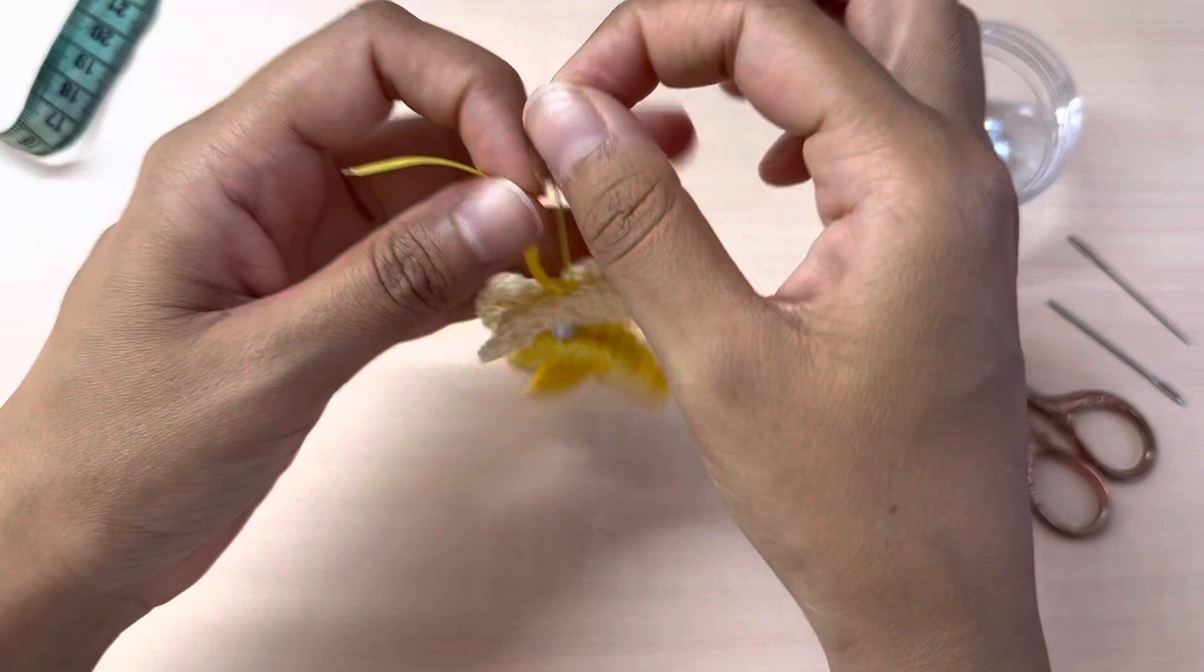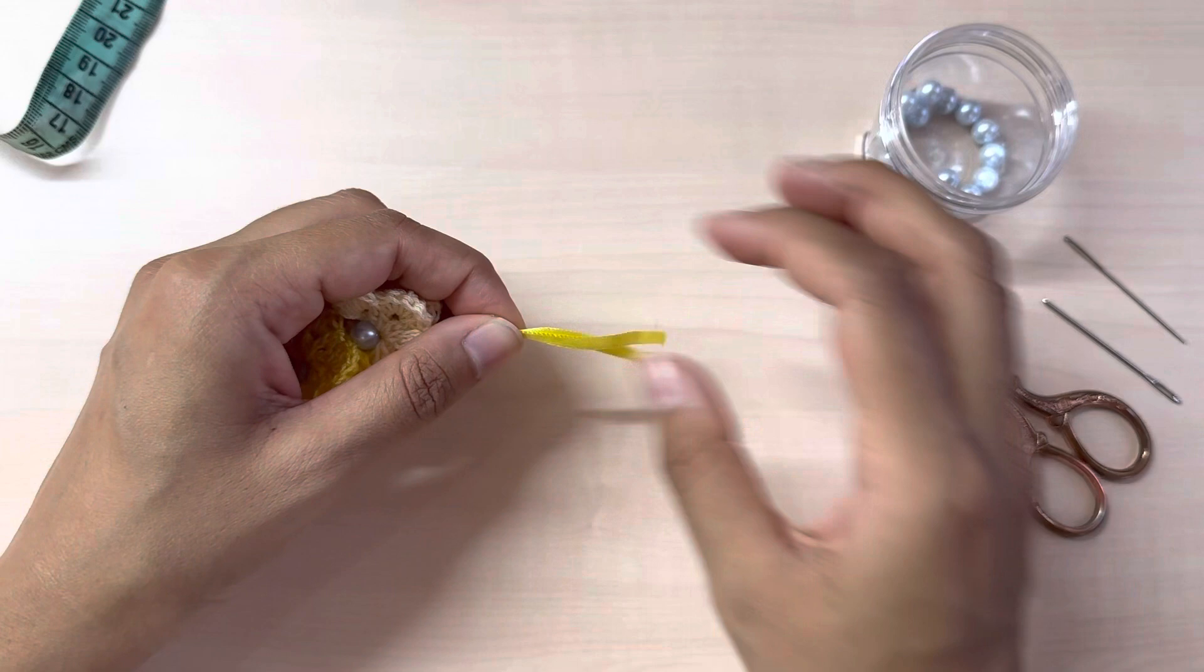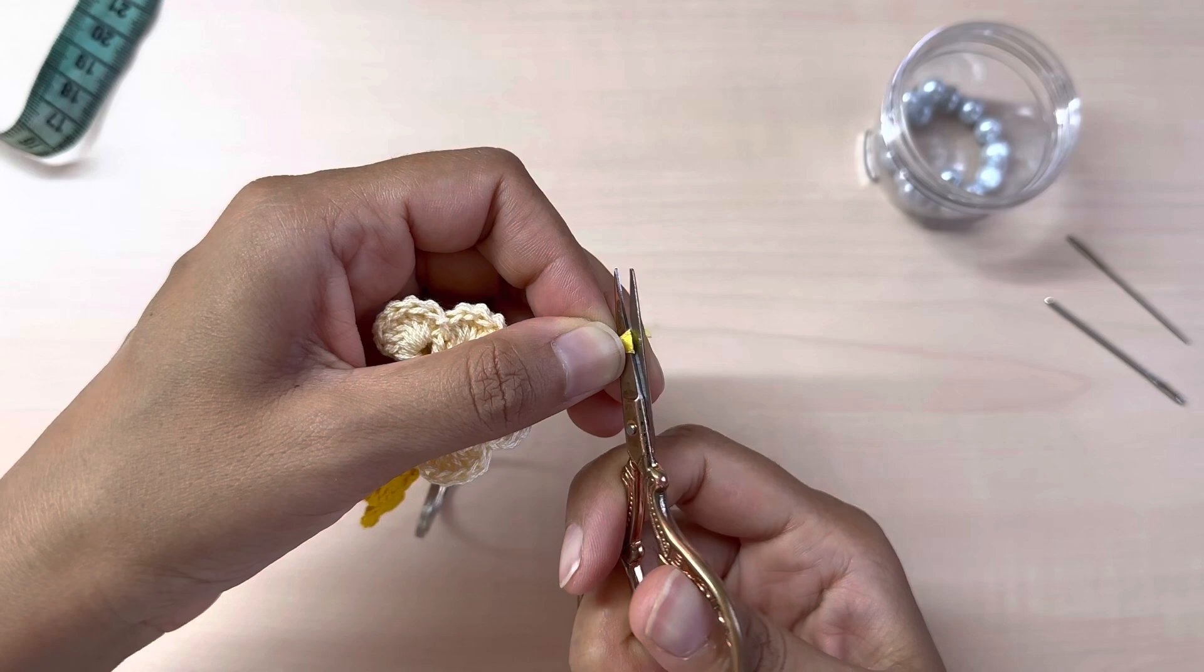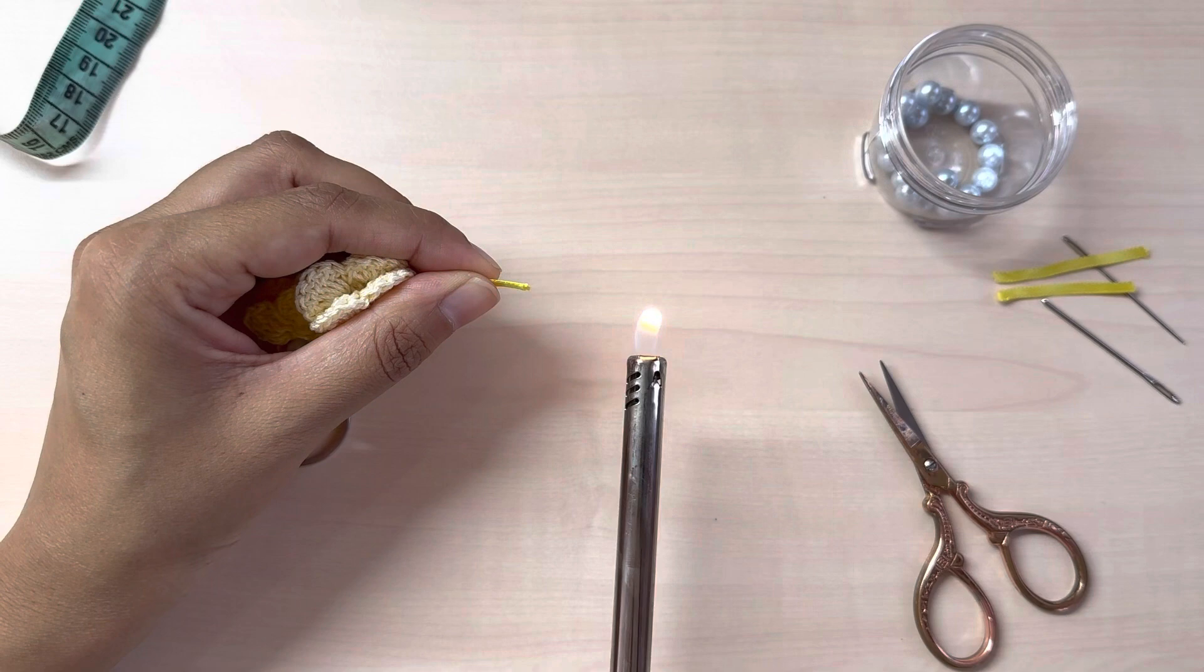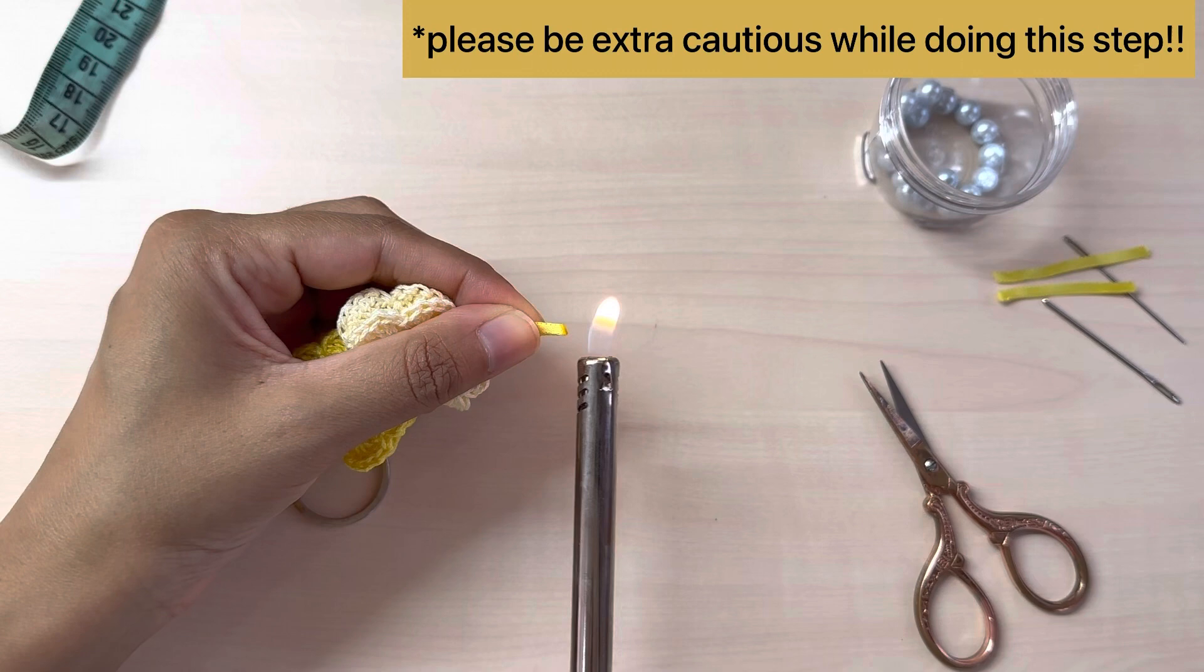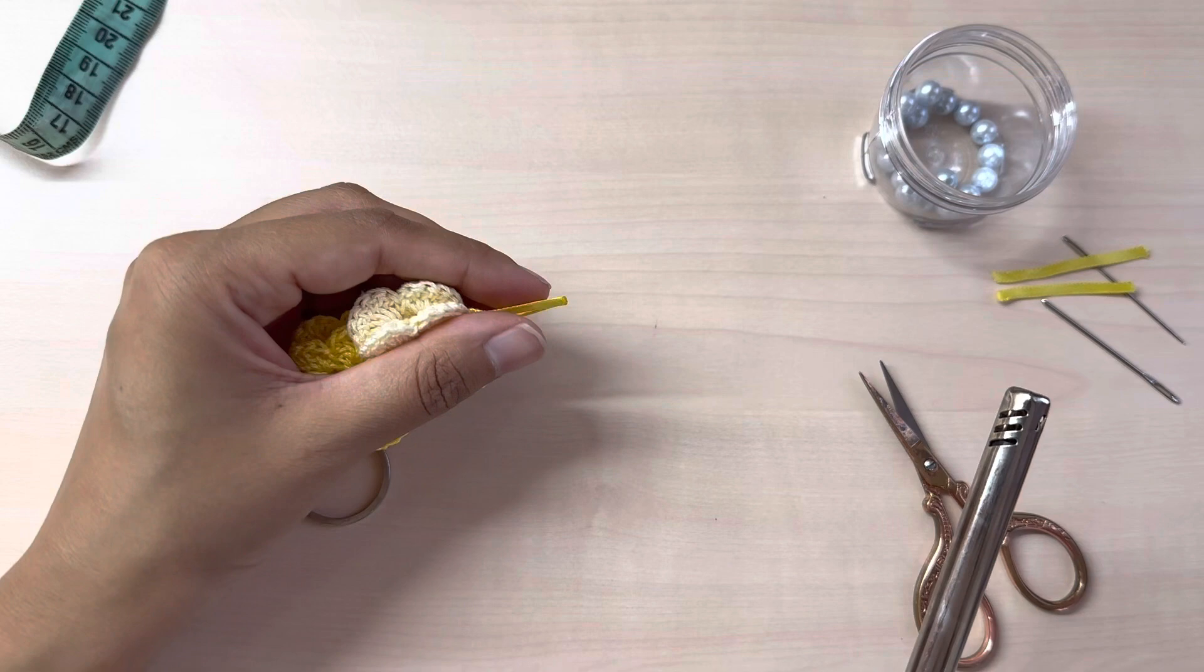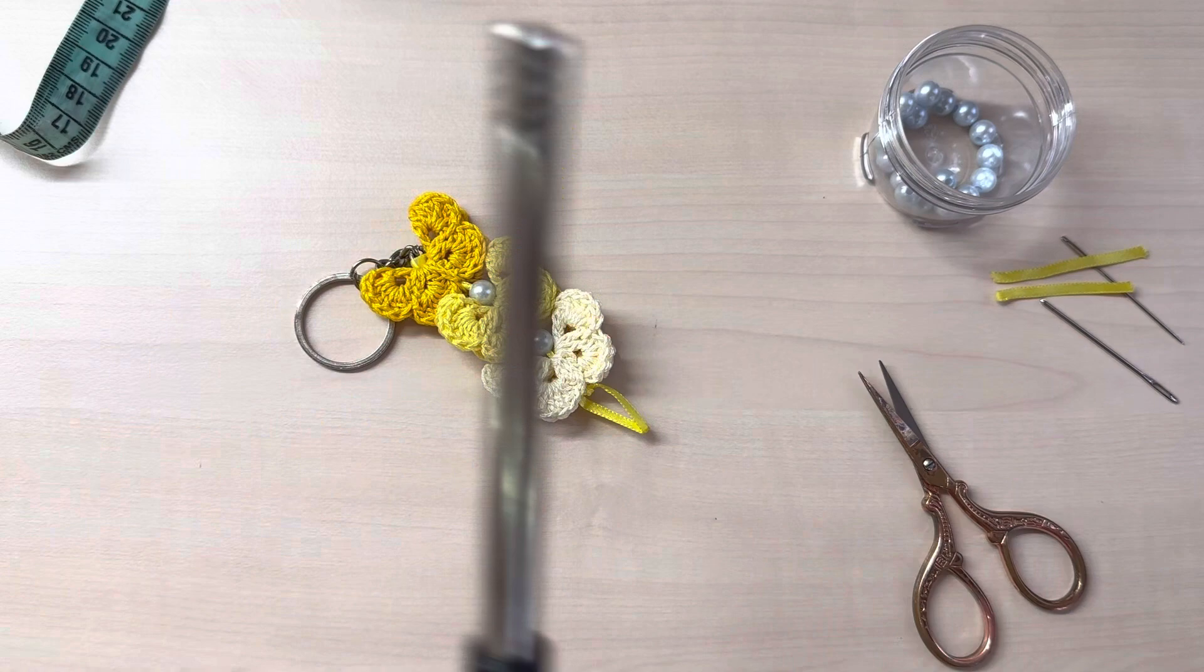Now I'm going to hold my two ribbons together, trim the excessive off, and using a lighter I'm just gonna very slightly seal it so that is going to prevent my ribbon from fraying. And our butterfly keychain is complete.